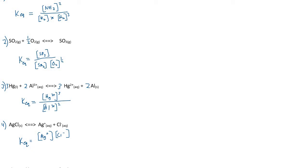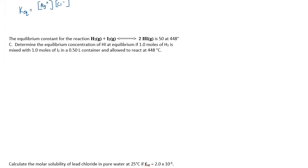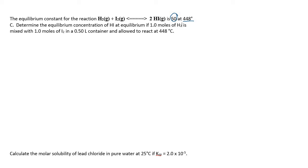Our equilibrium constant for a dissociation equation is really just the product of the two product concentrations — that's a basic practice with equilibrium constants. Now we really want to solve problems that look more like this: the equilibrium constant for the reaction of hydrogen gas and iodine gas producing two hydrogen iodide is 50 — so K = 50 at 448°C. K is dependent on temperature, so it has to be stated and is unique for every temperature.